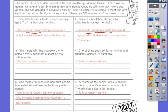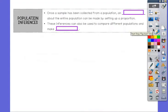Now to the back. Population inferences. Once a sample has been collected from a population, an inference about the entire population can be made by setting up a proportion. An inference is just kind of getting an idea. If I asked the class how many people like pizza, I can get an idea of how many seventh grade kids like pizza by just asking this one class. That's an inference, getting a good idea.